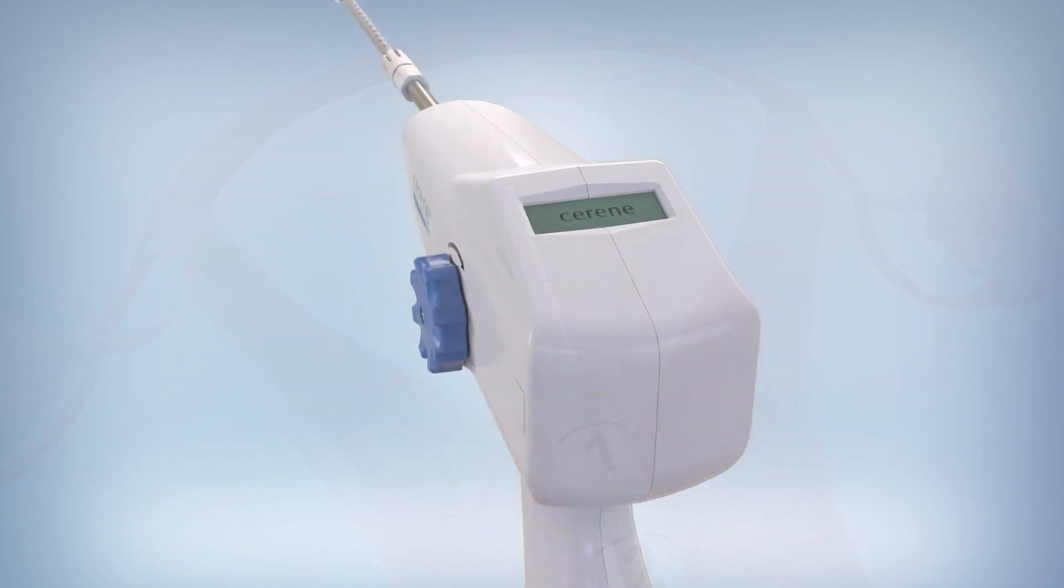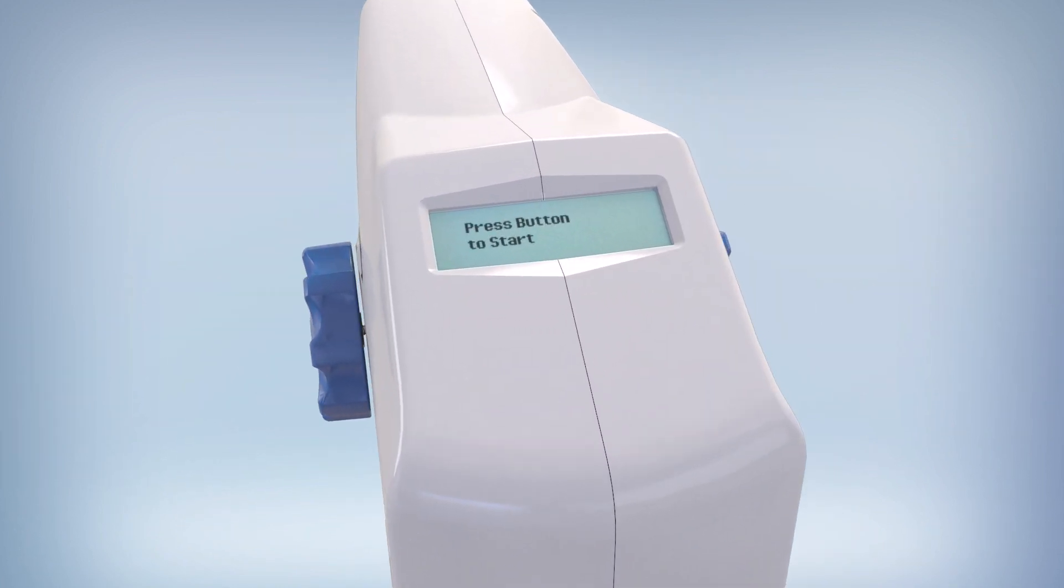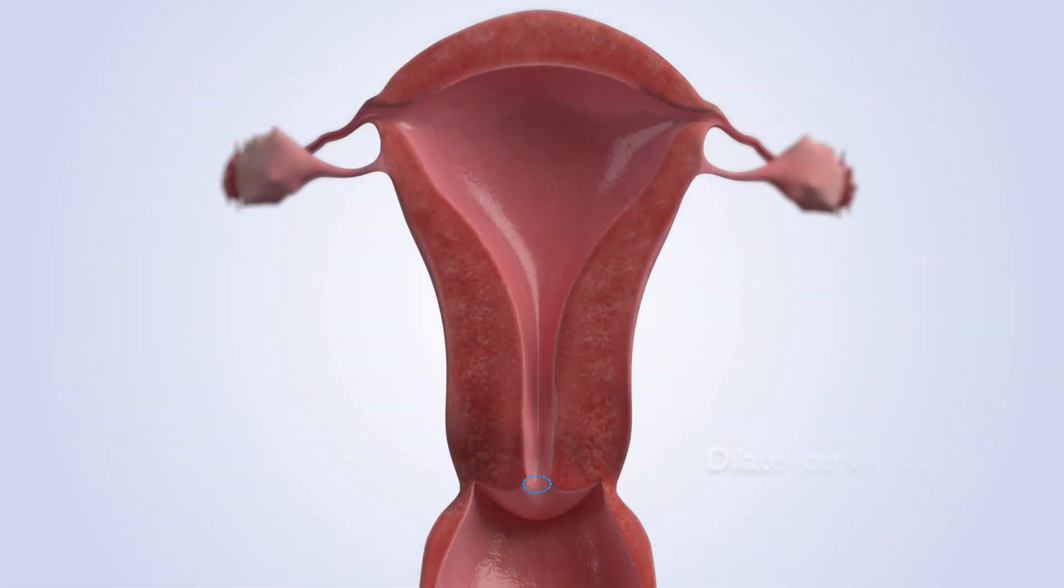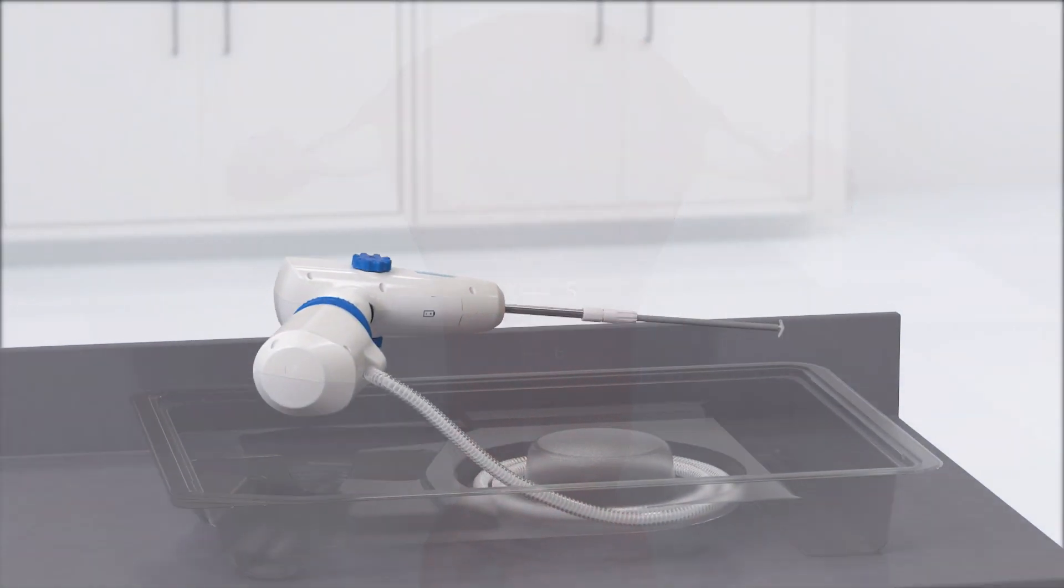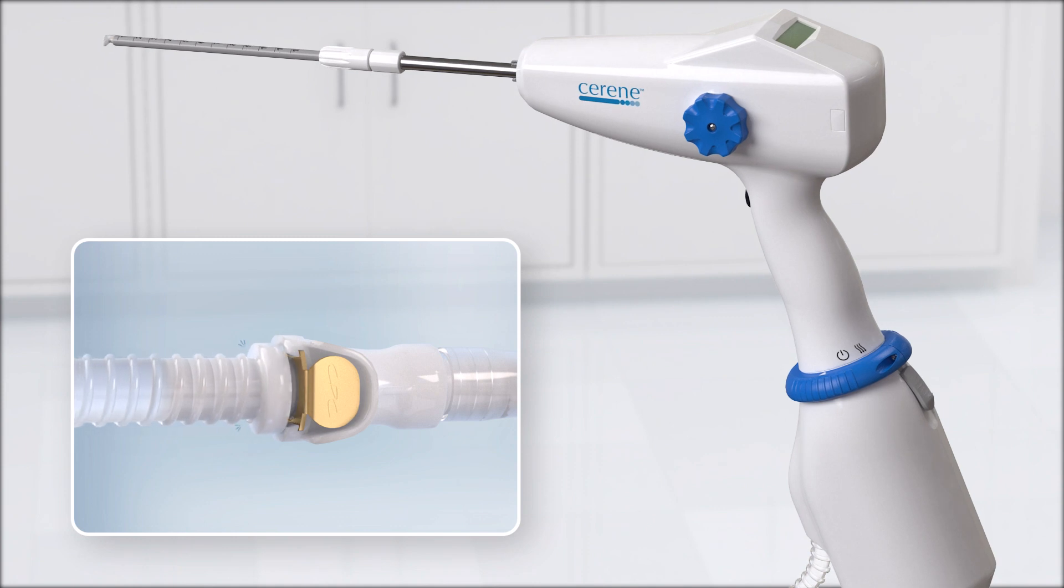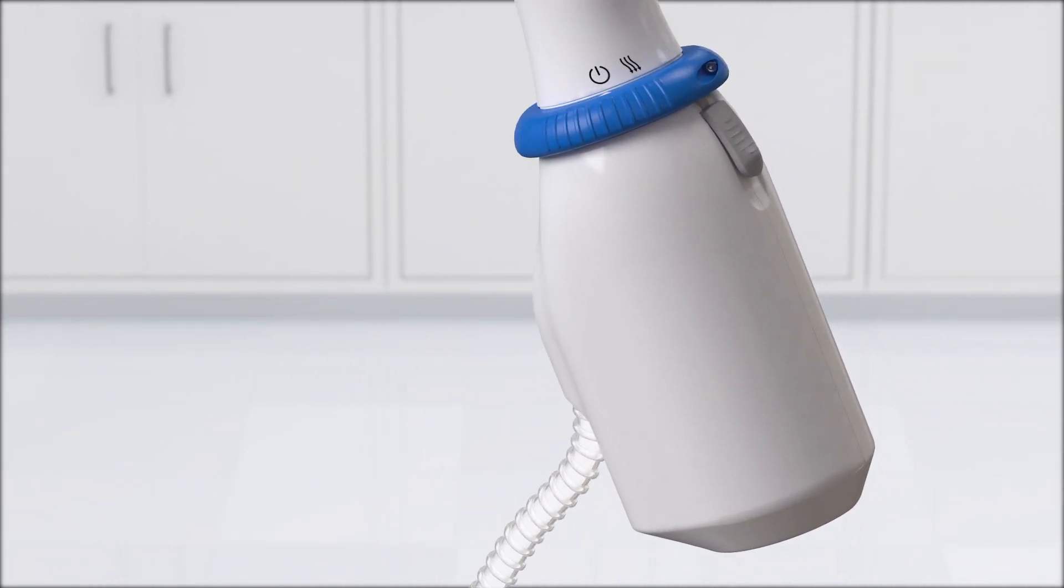The instructions on the LCD screen guide the gynecologist through the procedure. After preparing the patient, gently dilate the cervix if necessary and sound the uterus to determine the length of the uterine cavity. Remove the Serene Device from the sterile tray. Connect the end of the exhaust hose to the exhaust collection bag. Turn on the device by rotating the twist ring.